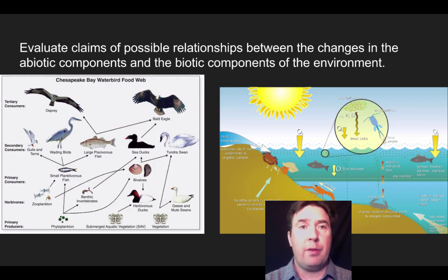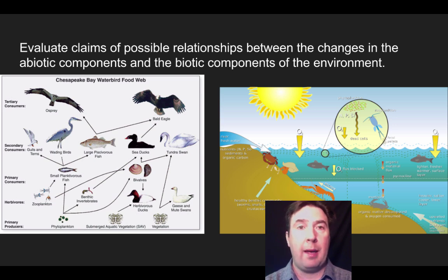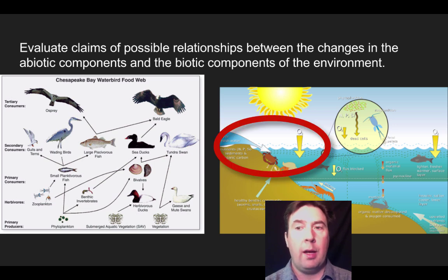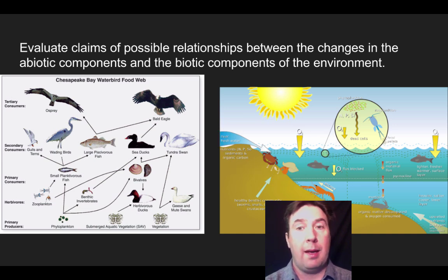Now let's look at actual biotic and abiotic factors together. On the left I have a food web from Chesapeake Bay, and on the right is a more nuanced aquatic ecosystem that includes nitrogen, phosphorus, silicon, and oxygen — incorporating both biotic and abiotic factors at the ecosystem level.